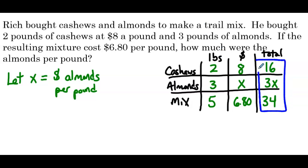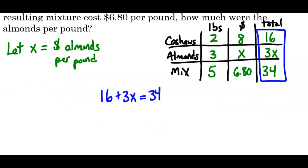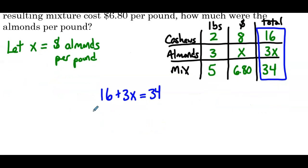So again, using this last column to create our equation, 16 plus 3x equals 34. We can subtract 16 on both sides. 3x equals 18. Multiply both sides by 1 third. So how much were the almonds per pound? The almonds were $6 per pound.